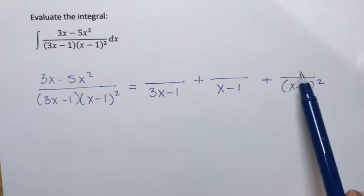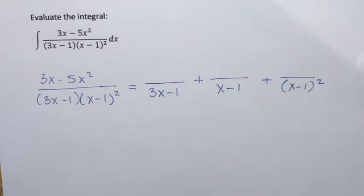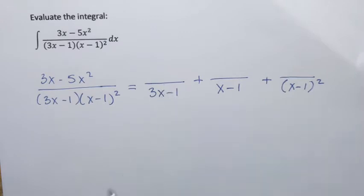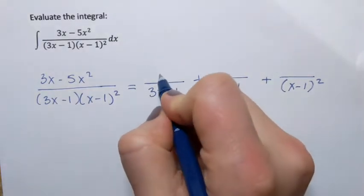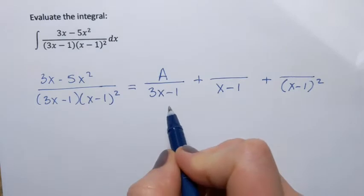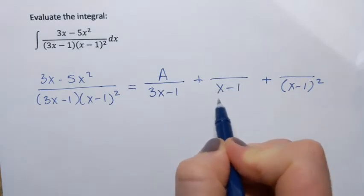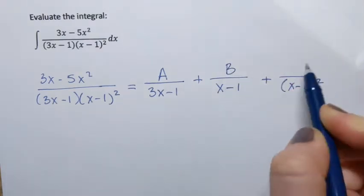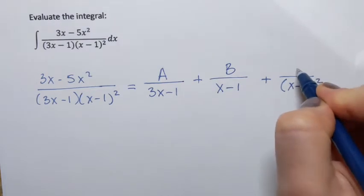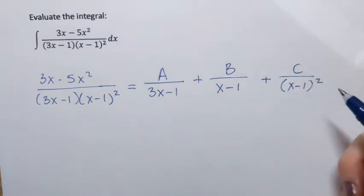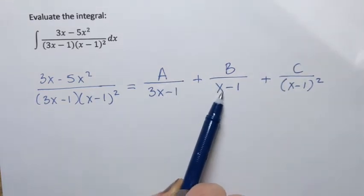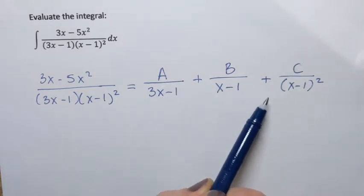Now, what do I put in the numerator? The rule is: if the denominator is a linear factor, the numerator will always be just a constant. So I'll use A for the first fraction, B for the second, and C for the third. That's what we always put above denominators that are linear factors.